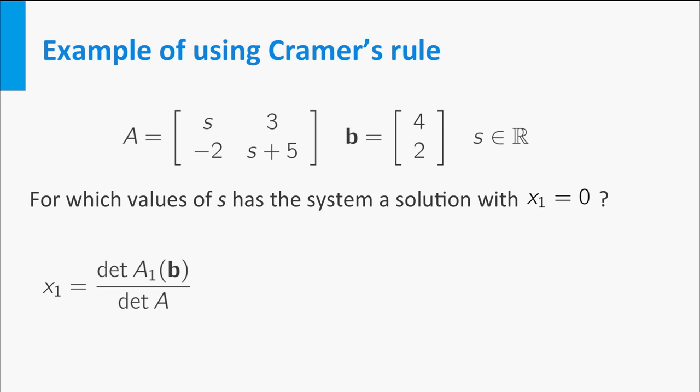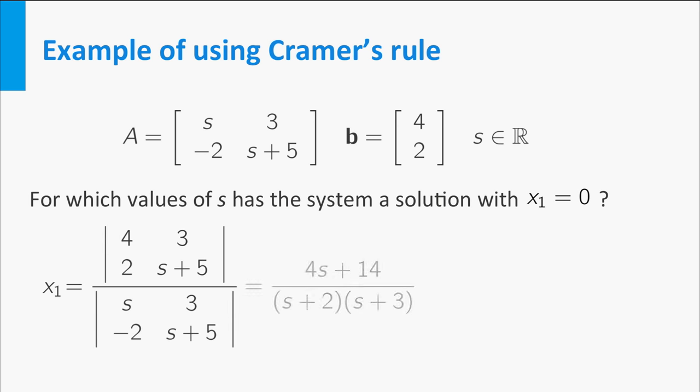With the matrix A and vector b of our example we find that x1 is equal to the determinant of the matrix [4 3; 2 s+5] divided by the determinant of the matrix [s 3; -2 s+5], which is equal to (4s plus 14) divided by (s plus 2) times (s plus 3).